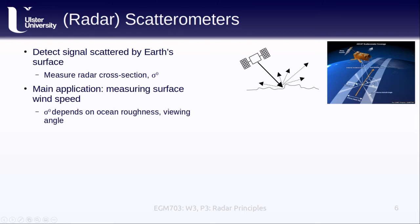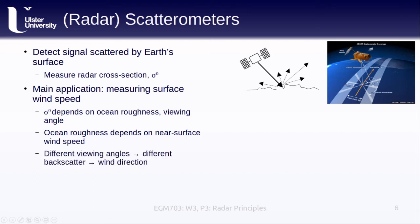The ocean roughness depends on the near surface wind speed. Wind is creating these very small capillary waves that change how that signal is scattered back to the sensor. And we can relate the measured backscatter to the wind speed. When we have different viewing angles we see different amounts of backscatter, which means we can also work out the wind direction.